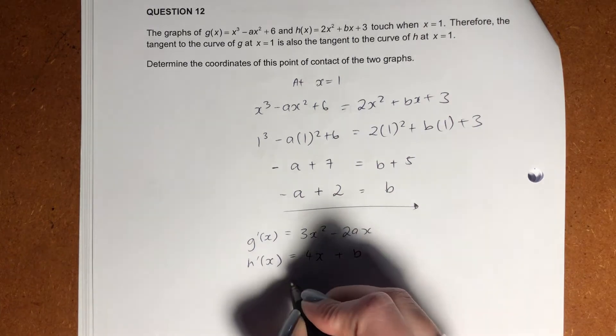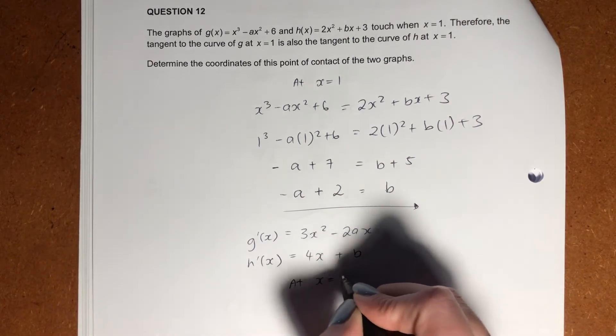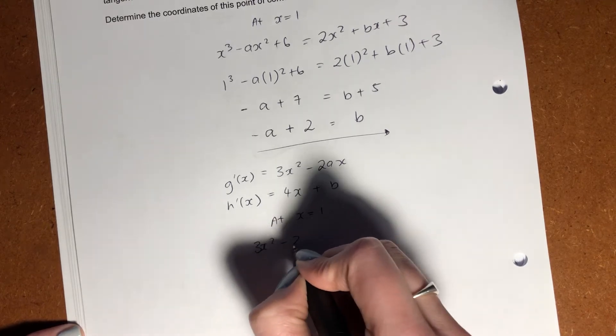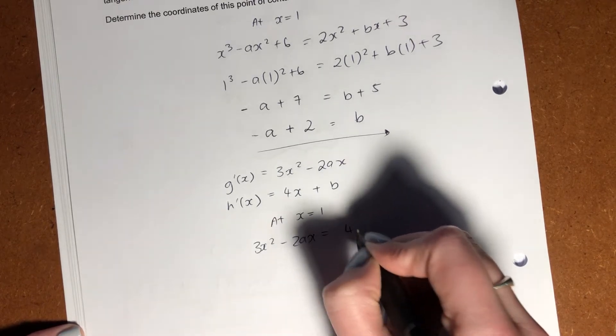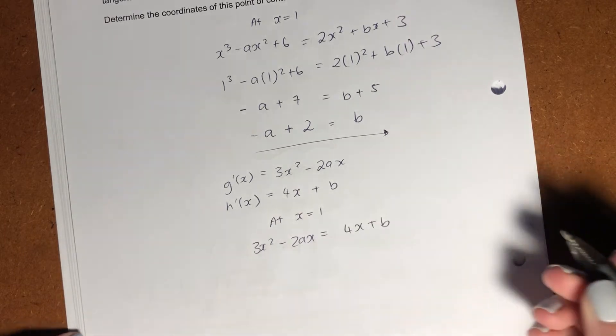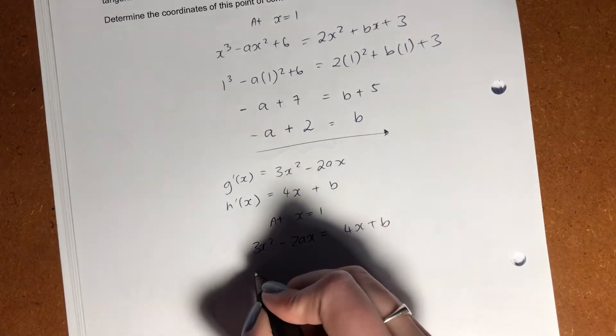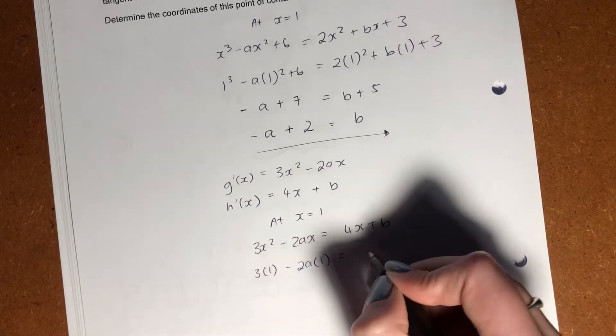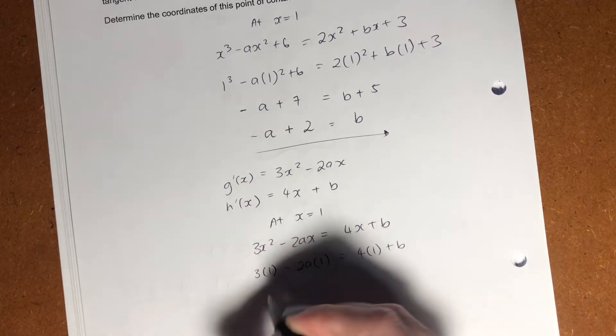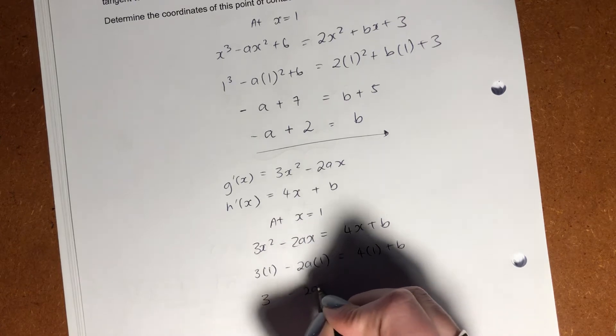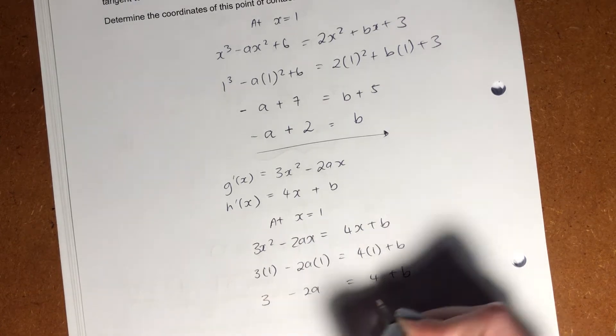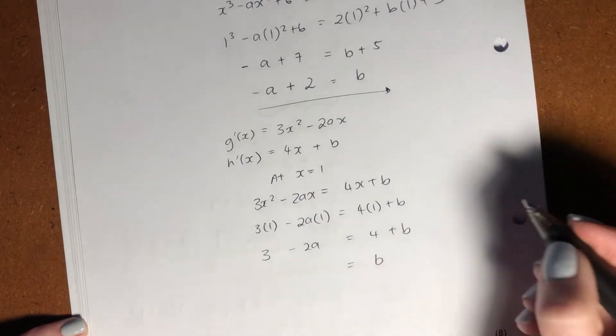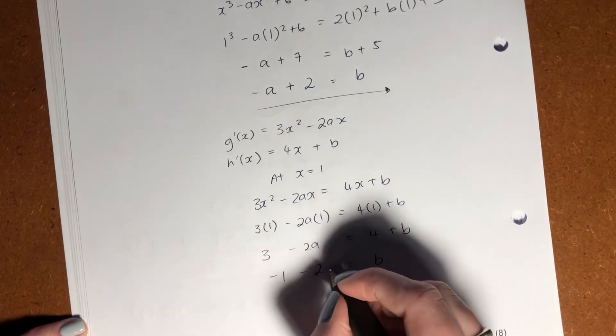At x equals 1, we know that these two gradients are going to equal each other because their tangents equal each other, right? And if their tangents equal each other, we know their gradients have to equal each other. So let's then sub in 1. Right. And let's see now if we can actually solve a bit further. So it becomes 3 minus 2a, 4 plus b. Right. Let's do this in terms of b again. So bring that across. Negative 1 minus 2a equals b.